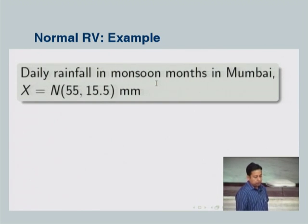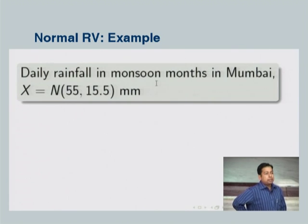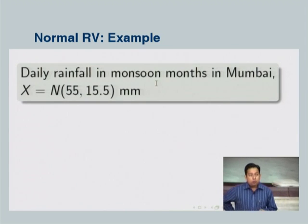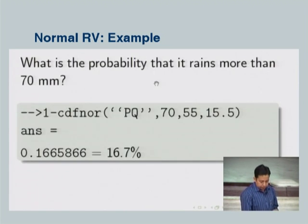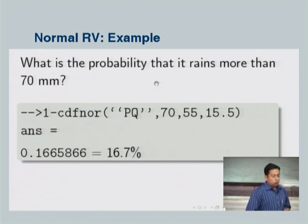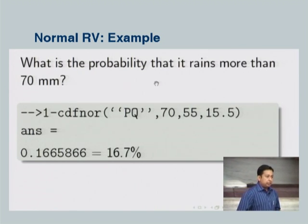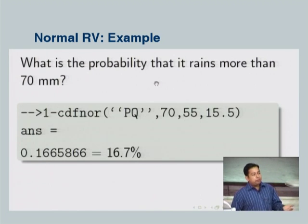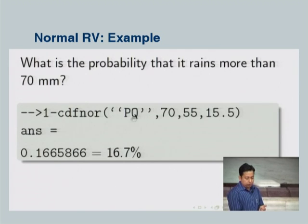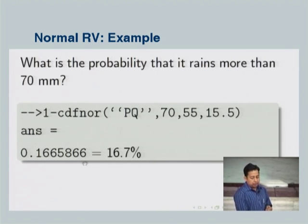Example: daily rainfall in monsoon months in Mumbai can be described by a normal random variable x with mean 55 mm and standard deviation 15.5 mm. What is the probability that it rains more than 70 mm? That is 1 minus the CDF at 70. Using cdfnor with 'PQ', value 70, mean 55, standard deviation 15.5, we get approximately 16.7 percent.